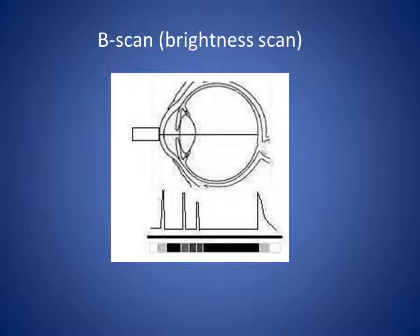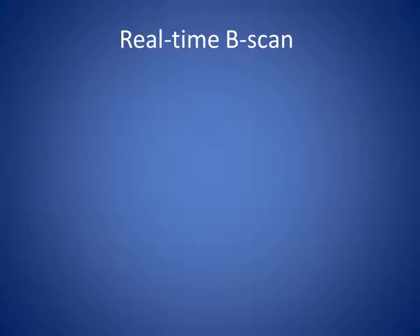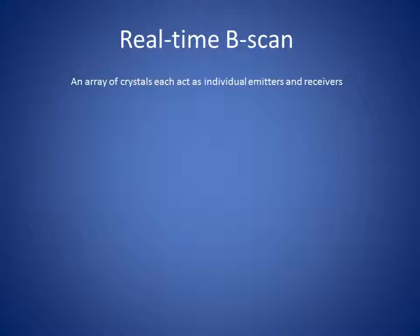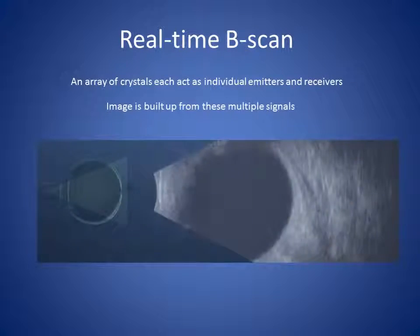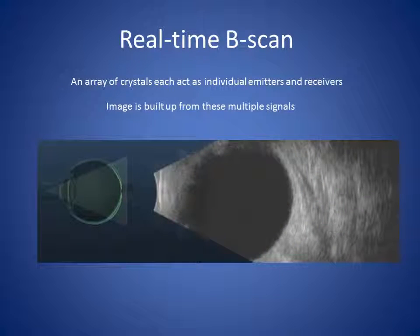The area that does not give rise to any spike — for example, in the eye, the aqueous and the vitreous — will appear black. The corneal spike and the retinal spike in this image have the biggest amplitude and therefore appear nearly white. In modern ultrasound scanners, an array of crystals in the ultrasound probe each act as individual emitters and receivers. The signals from each crystal are processed and constructed into the final, real-time image on the screen.